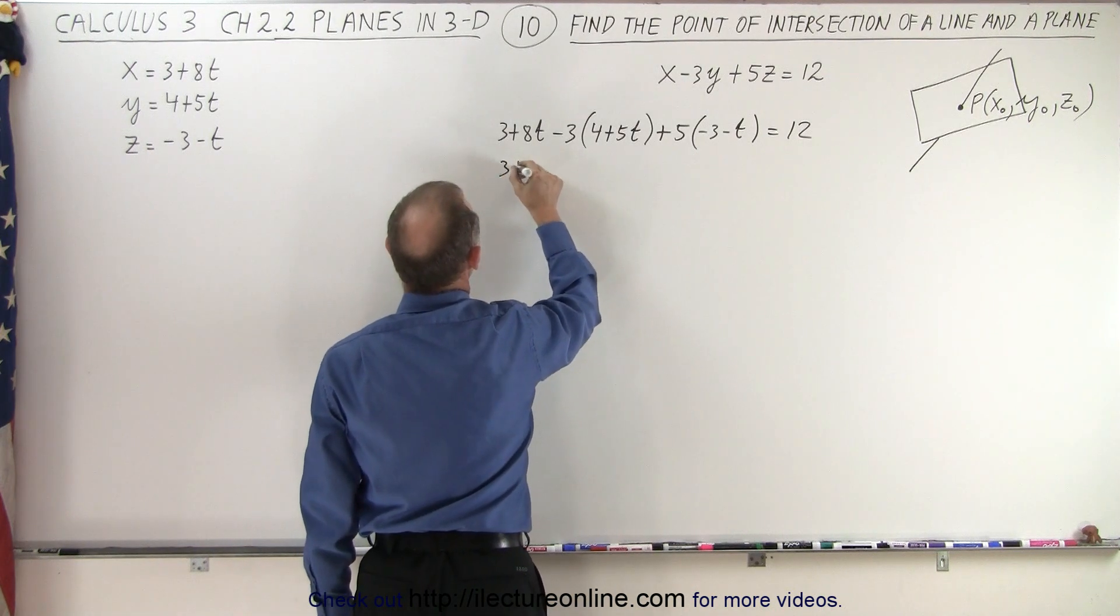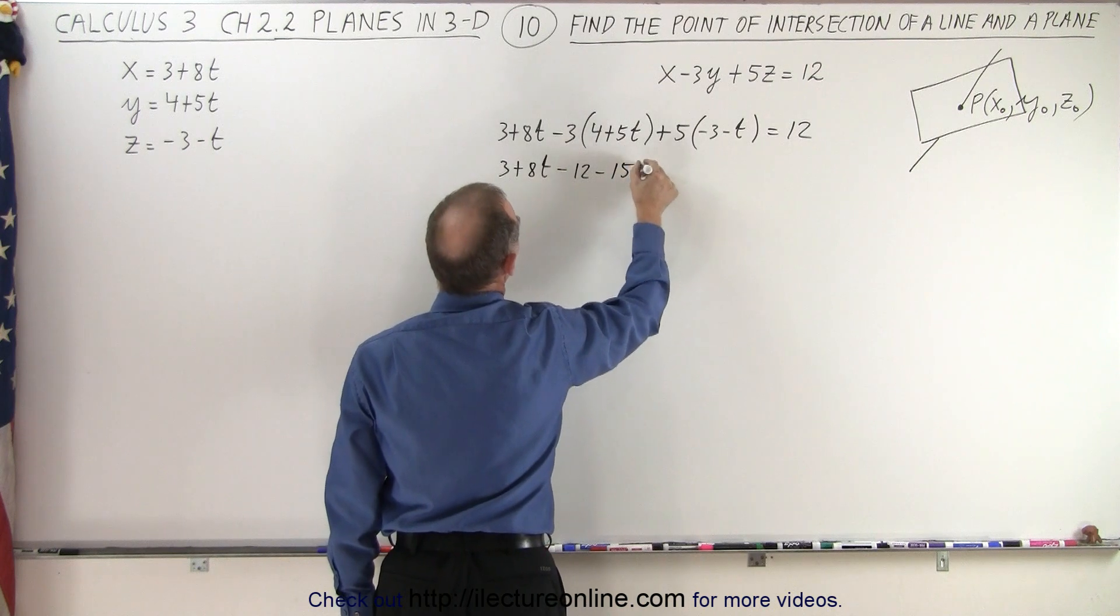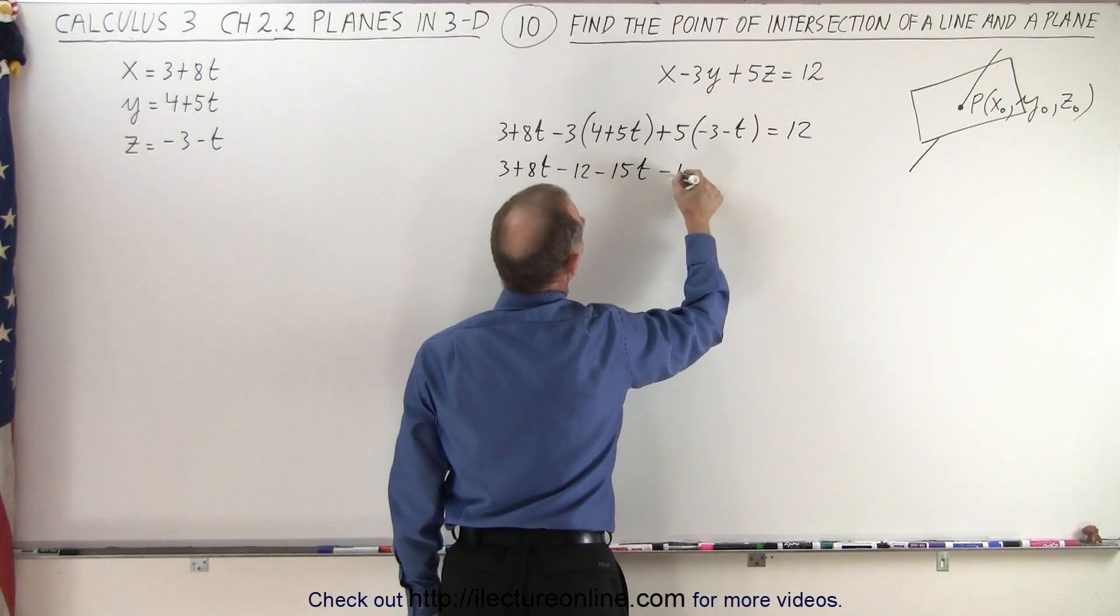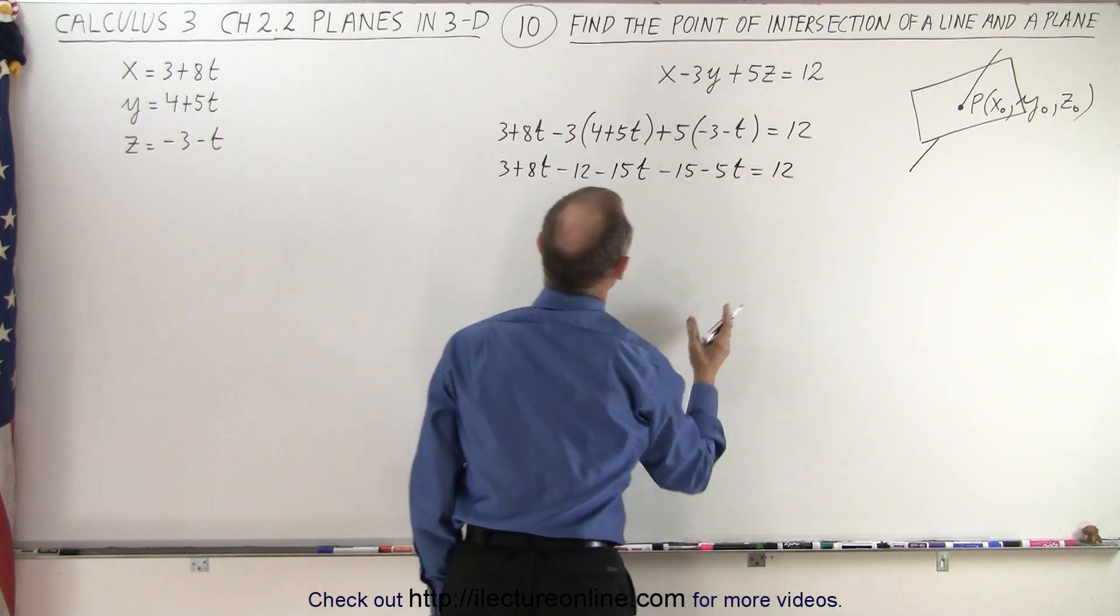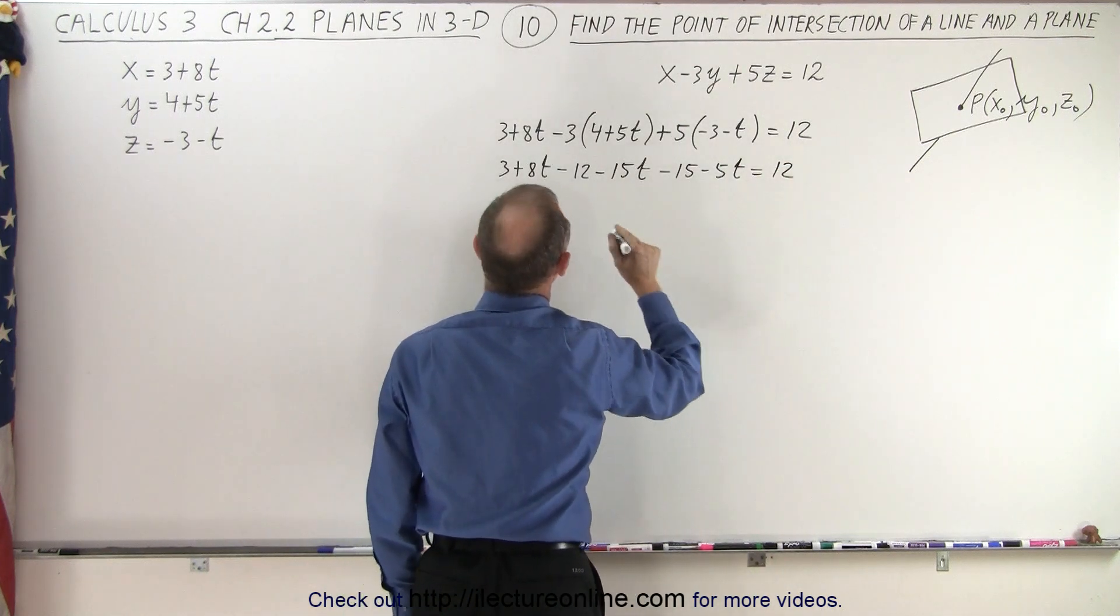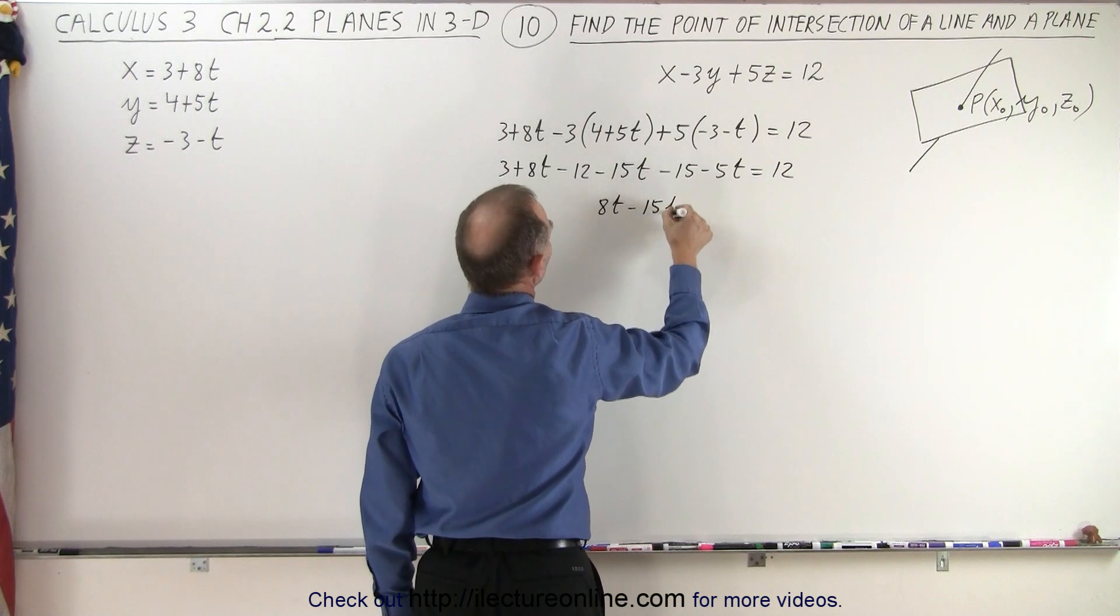It gives us 3 plus 8t minus 12 minus 15t minus 15 minus 5t is equal to 12. So leaving all the t's on one side, all the numbers on the other side, we get 8t minus 15t minus 5t is equal to 12 minus 3 plus 12 and plus 15.